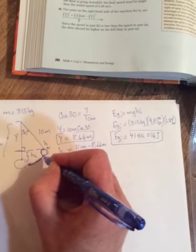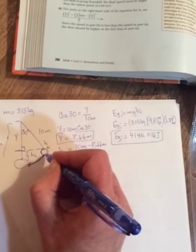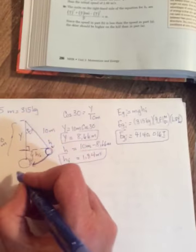When it swings back down, as it goes down, it loses height, which means it loses gravitational potential energy, but it picks up speed, which means it gains kinetic energy.